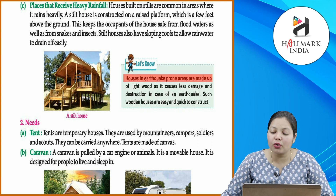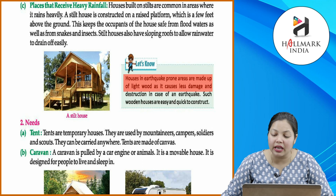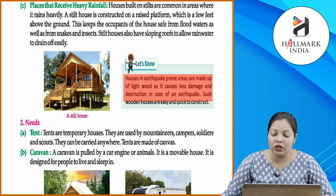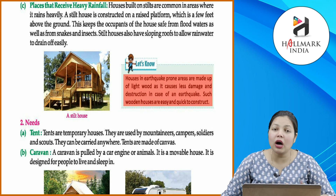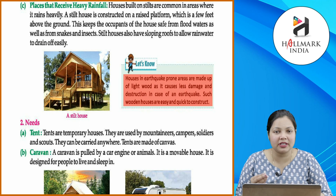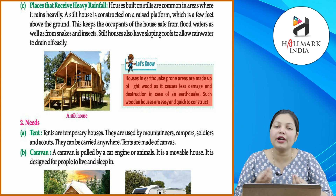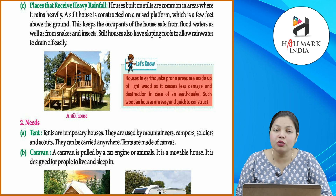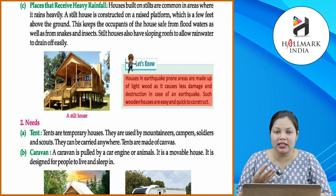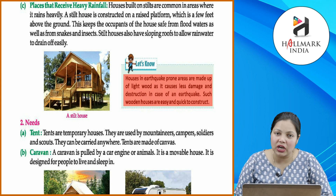Houses in earthquake-prone areas are made of light wood, as it causes less damage and destruction in case of an earthquake. Such wooden houses are easily and quickly constructed. Un houses mein jahan pe earthquakes sabse zyada aate hain, un areas mein bilkul light wood se gharon ko banaya jaata hai, jiski wajah se kam nuksan ho logon ko. Aur is tariqe ke jo houses hain, dubara se easily construct kiye ja sakte hain.